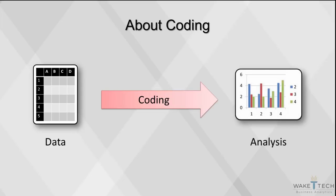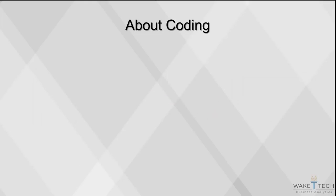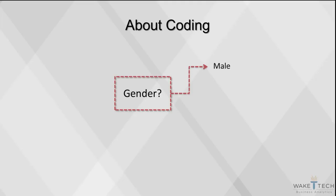Coding involves assigning a value to the information given in a questionnaire, and often that value is given a label. Coding can make the data more consistent. For example, if you ask the question 'what gender,' you might end up with the answers male, female, M, F, etc. Coding will avoid such inconsistencies.